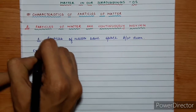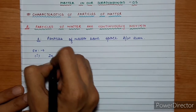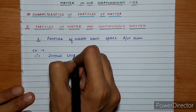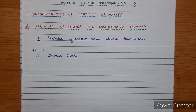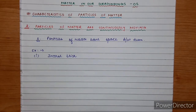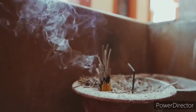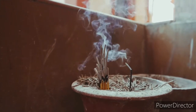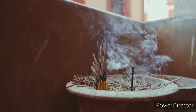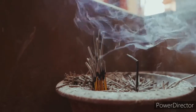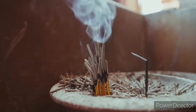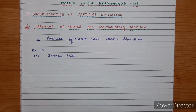हम daily life examples देखते हैं। First example लेते हैं एक incense stick का — incense stick को हिंदी में अगरबत्ती कहते हैं जो पूजाघरों में use होती है। उसकी खुश्बू आपको बहुत distance के बाद भी सूंघने को मिल जाती है अगर वो lighted हो। Simple रखी है तो पास जाकर सूंघना पड़ेगा, पर light करने पर दूर से ही खुश्बू आ जाती है। Incense stick के particles जब light करते हैं तो कैसे continuously move कर रहे हैं — वो धुआं आपको दिख रहा होगा — they are continuously moving।